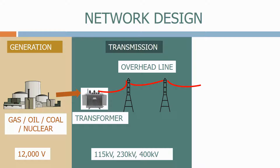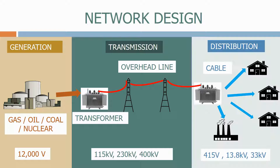Transmission systems use overhead lines. To allow the electricity to be transmitted over long distances we need to step up the voltage. We do this with a transformer. We step up the voltage to minimise the losses on the line and reduce the size of the conductor. The transmission voltage tends to be 115 kV, 230 kV or 400 kV.